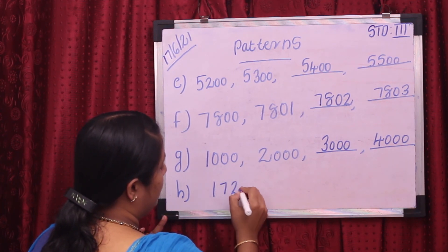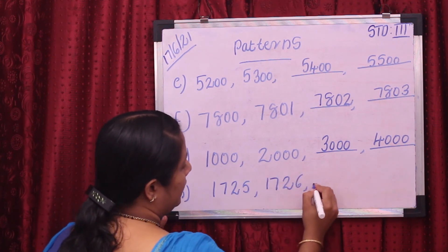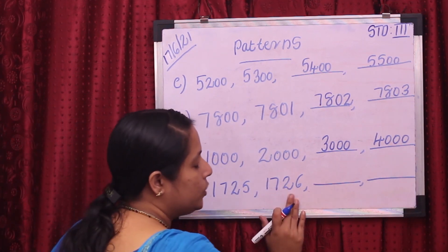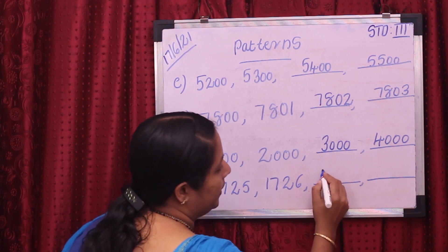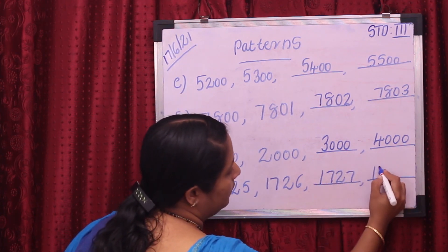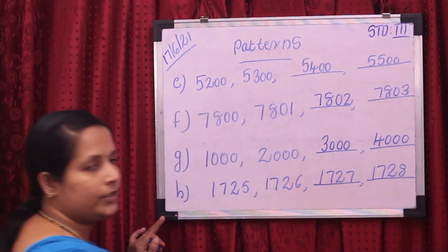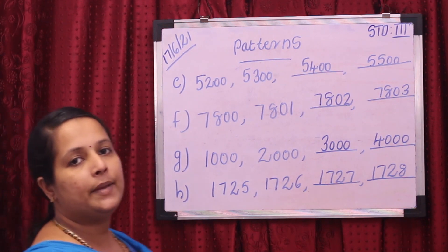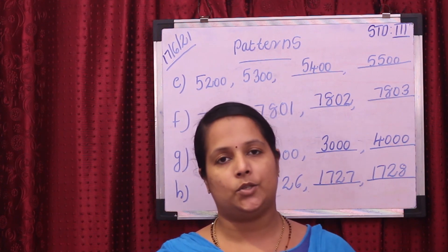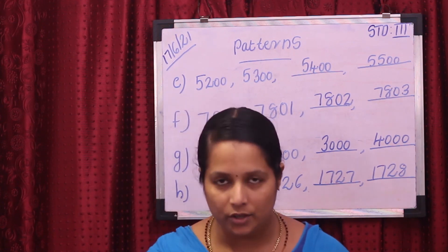Next pattern: 1,725, then 1,726, then the next is 1,727, then 1,728. So patterns means the repeated arrangement of numbers, shapes, etc. Here we study the number pattern. Okay students, thank you.